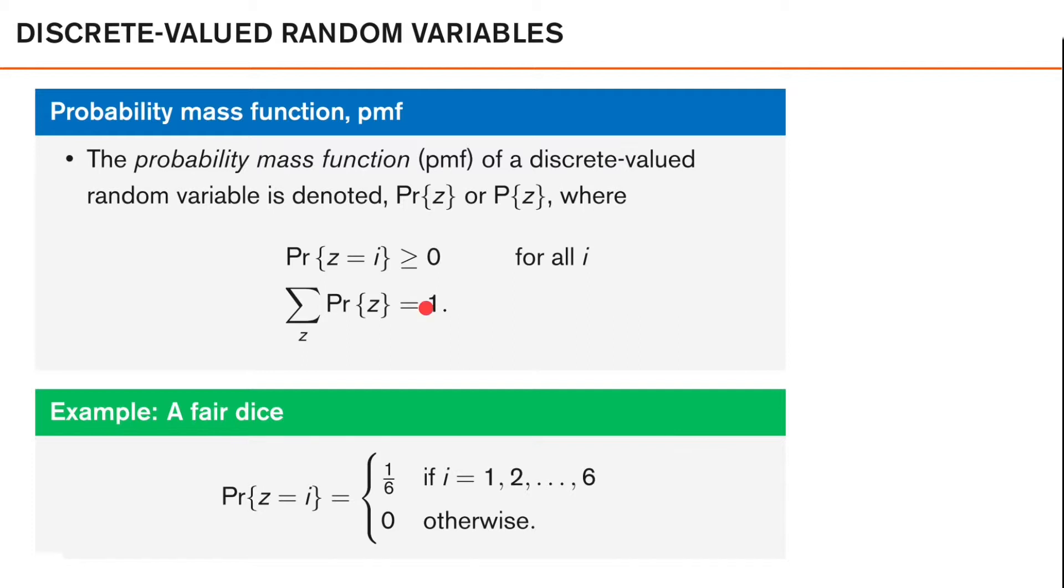Now, if we look at this using the example of a fair dice, the probability mass function for the face value that we get if we roll the dice can be written like this. So the dice has six faces with the value 1 through 6, which each is equally probable. So the probability that z is i is equal to 1/6 if i is equal to 1, 2, and so on, up to 6, and 0 otherwise.